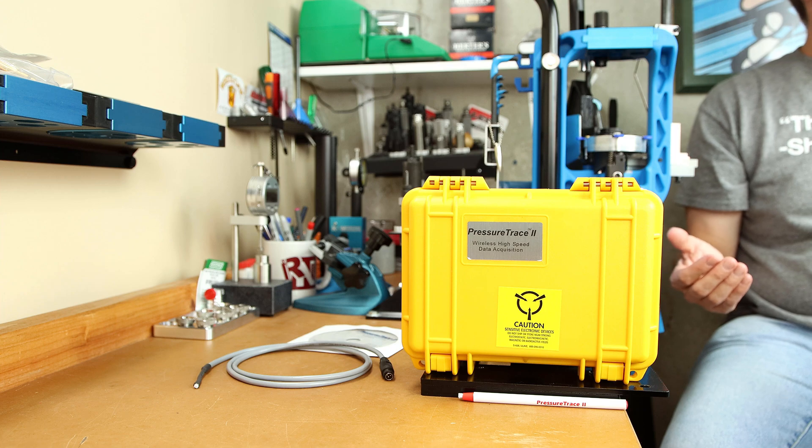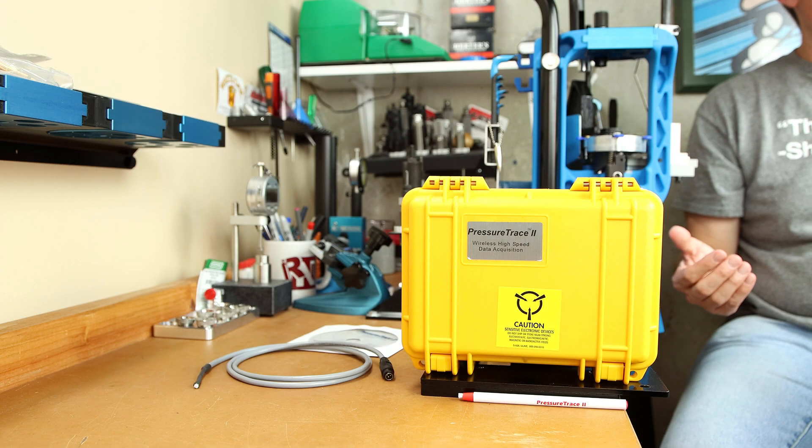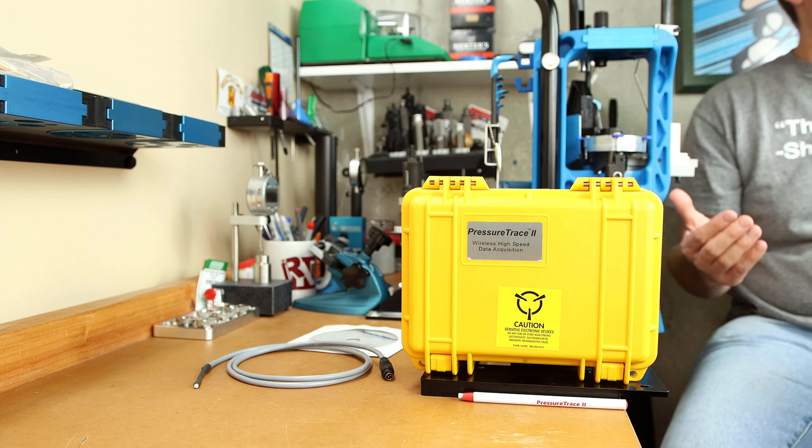Plugging our data into Quick Load, we're going to see that its estimated pressure is going to be starting at 53,335 PSI. And our max charge at 44 grains is going to increase all the way up to 66,684 PSI. But because we have no offset plugged in, that certainly isn't going to be the case for what we measured.